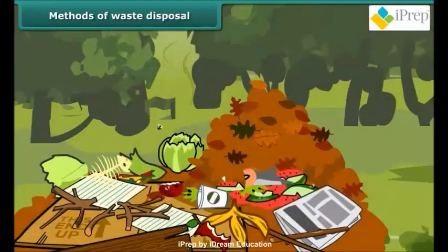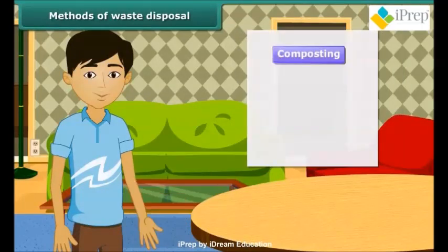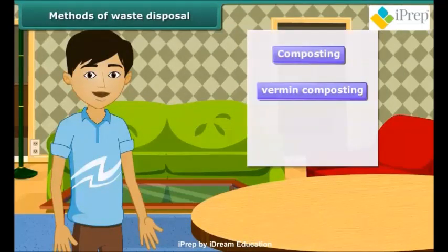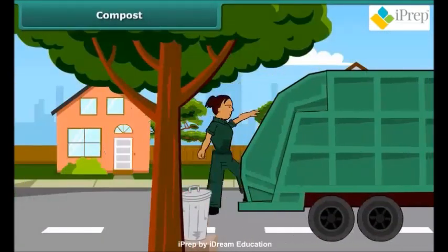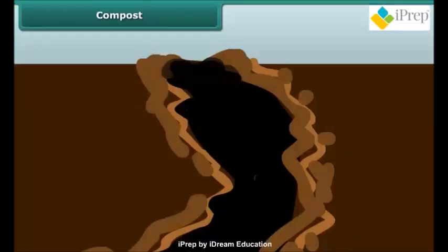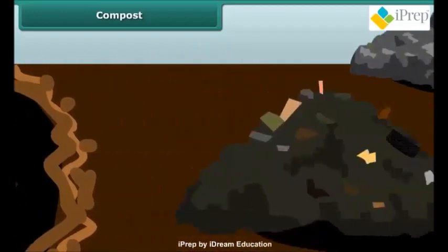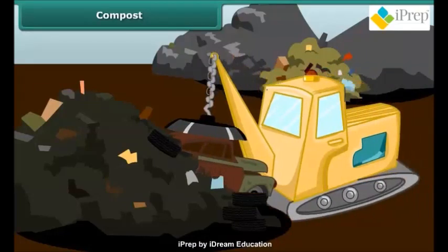Careless disposal of garbage attracts disease-causing insects. Let us look at various methods of waste disposal like composting, vermicomposting, and recycling of paper. The garbage van collects garbage from the locality and takes it to open areas. These open areas contain deep trenches known as filling areas, where the useful and useless parts of waste are segregated.